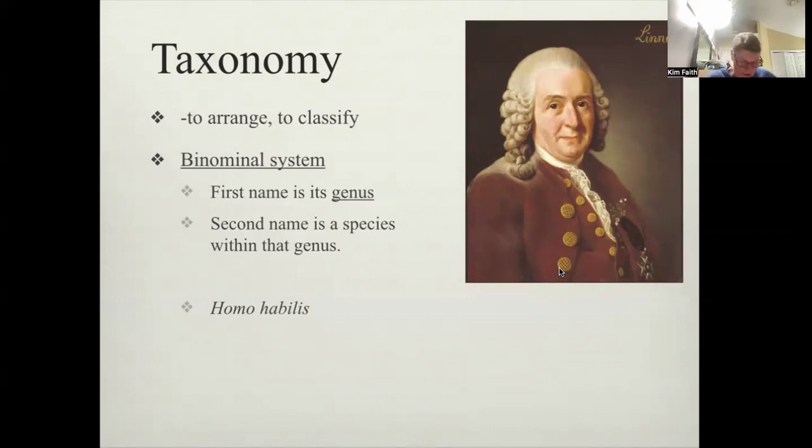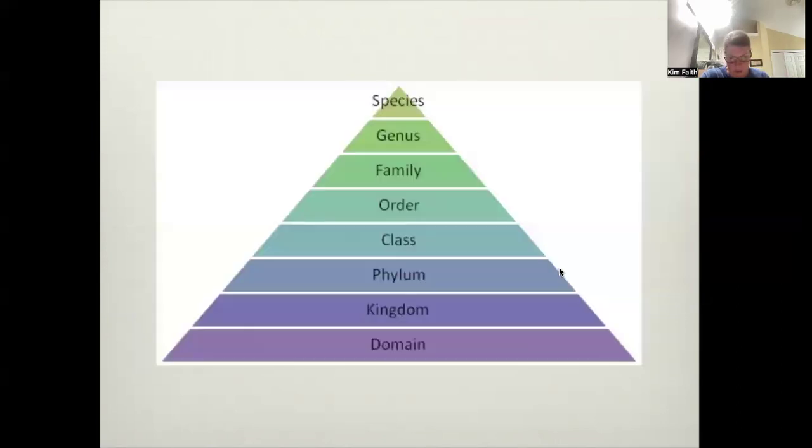So we have the first name is the genus. The second is the species. So Homo habilis, that's one of the species in our family tree, which we'll get to later in this unit. And so we have this classification where we go from small, like this would be one individual. This would contain a few, and then more, and then more. We go from kingdom, domain is the broadest, right? And we go kingdom, phylum, class, order, family, genus, species.